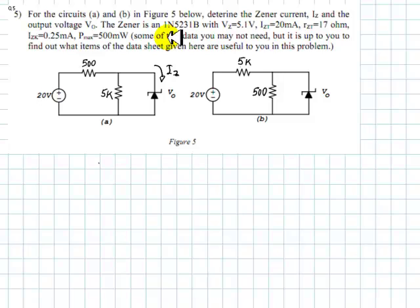The Zener is a 1N5231B. It has a Zener nominal value of 5.1 volts. That's the voltage of the Zener diode when the current is a test current of 20 milliamps.